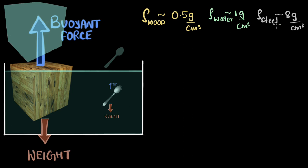When it comes to steel, steel weighs eight grams per cm³, but water weighs only one gram per cm³. So every cm³ of spoon weighs eight grams, but every cm³ of water weighs only one gram. Therefore, the displaced water will weigh less than the spoon, and therefore the buoyant force becomes smaller.